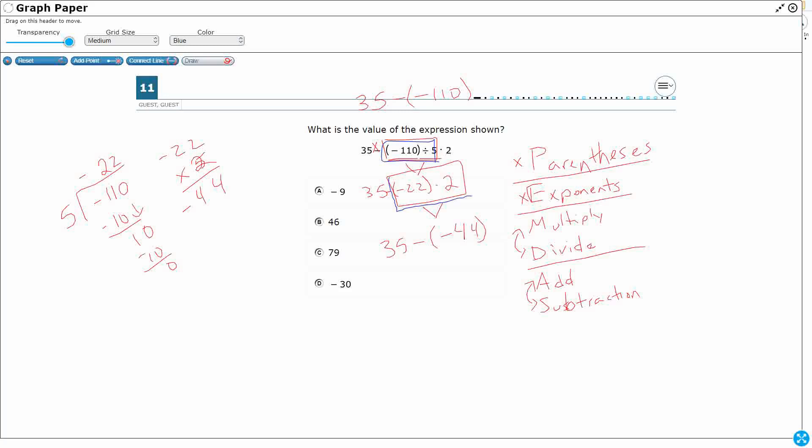And then I finally dealt with that times 2 to get me my negative 44. I'm done with my multiply and divide. Now I'm down to my addition and subtraction.